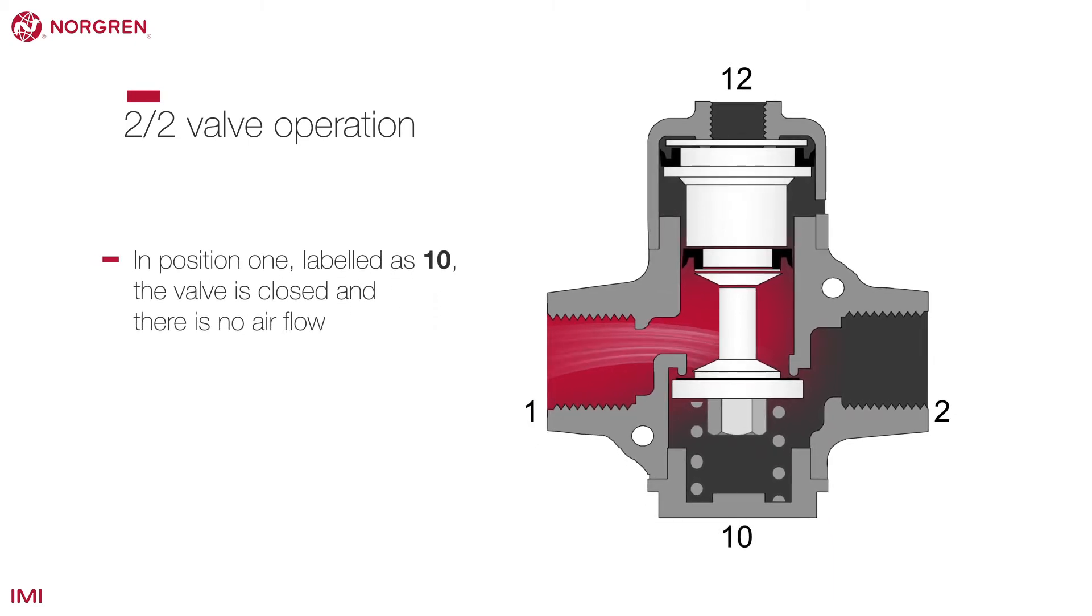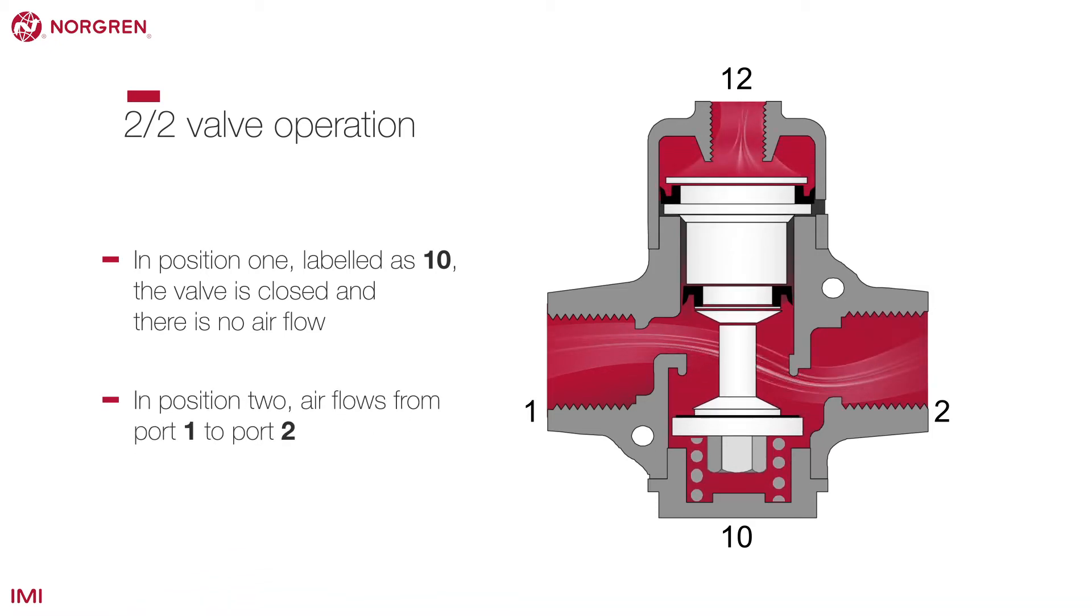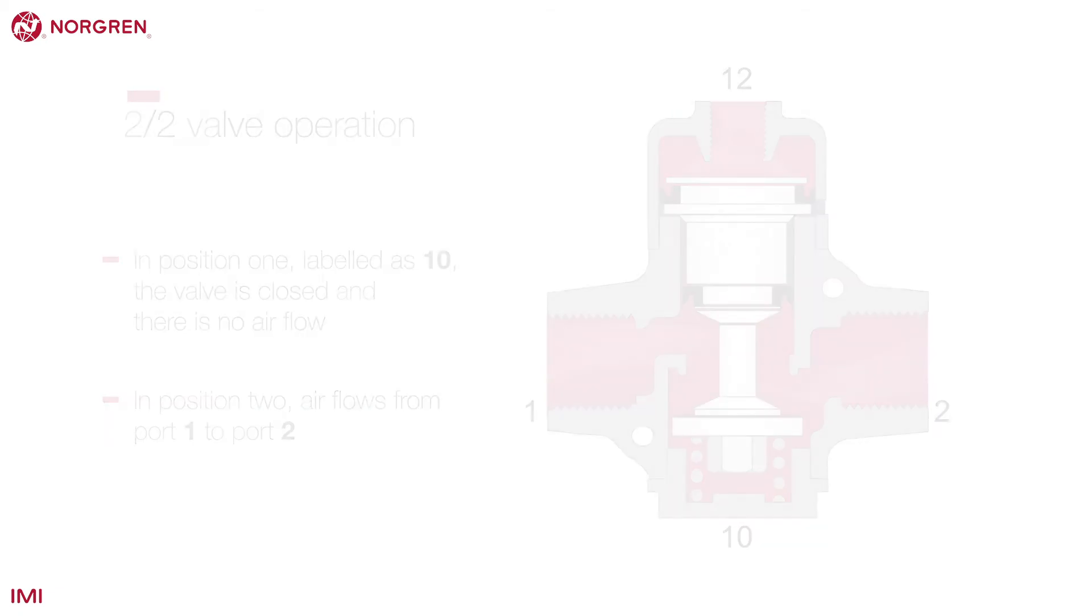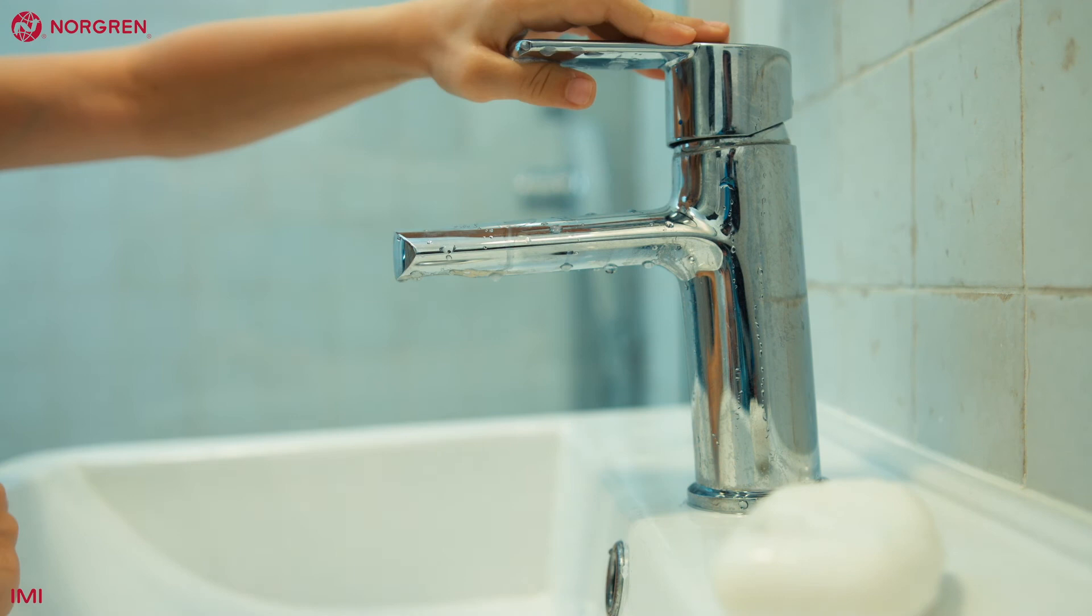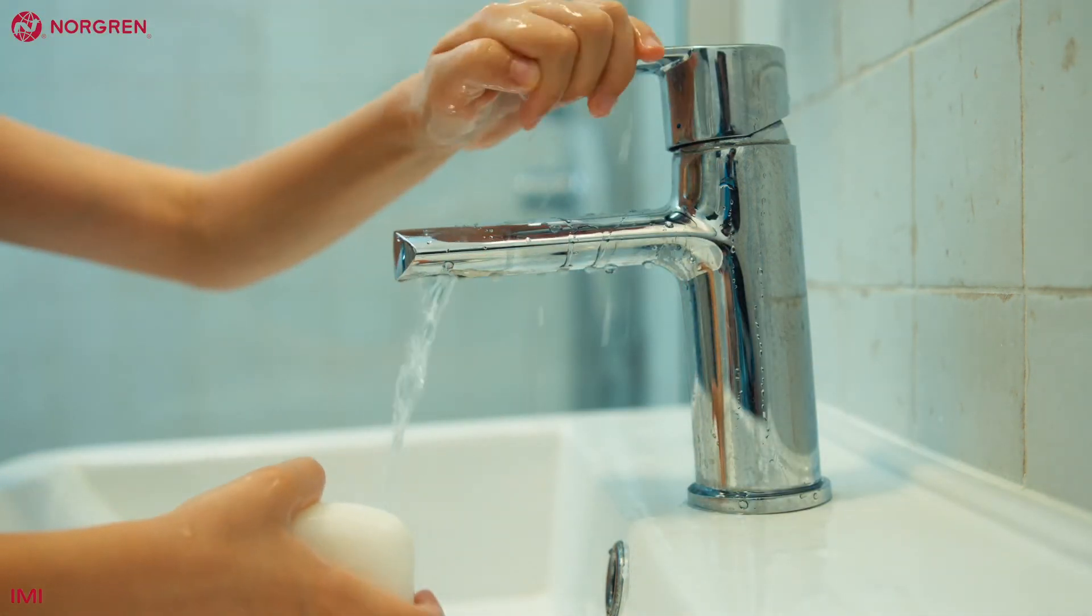In position 1, labelled as 1-0, the valve is closed and there is no airflow. In position 2, air flows from port 1 to port 2. This simple valve is similar to the tap over a wash basin. When it is in one position, water flows. In the other, it stops.